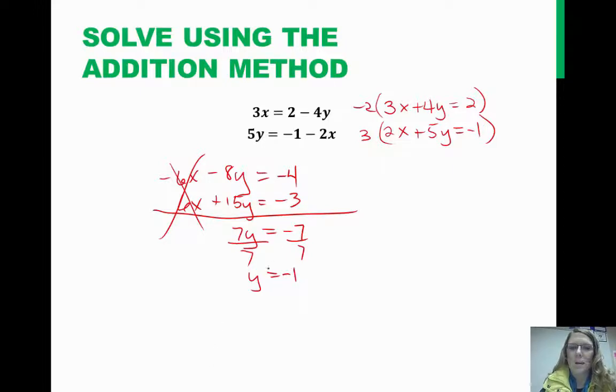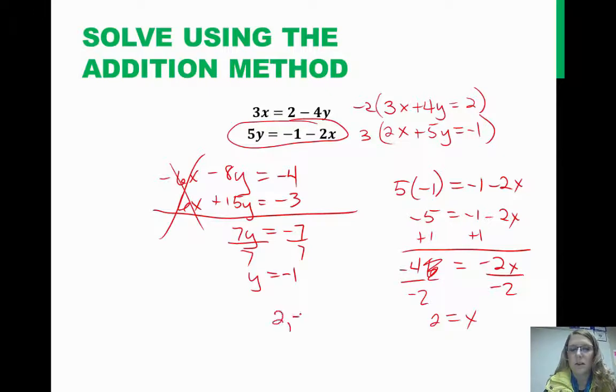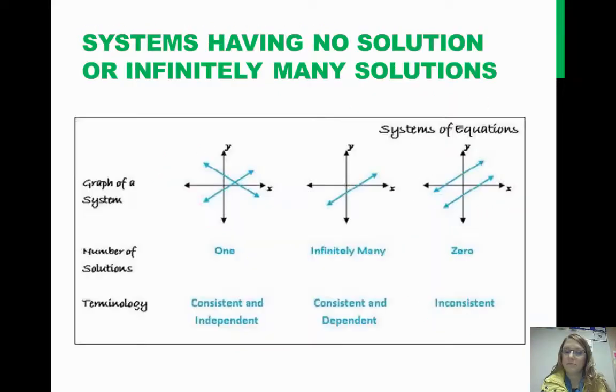Let's back substitute. We can go ahead and put this into one of our original equations. Let's use this one because that one looks like it would be easier to use. We'll do 5 times negative 1 equals negative 1 minus 2x. Negative 5 equals negative 1 minus 2x. Now let's solve for x. That's negative 4 and negative 2x divide by negative 2 for both, and we have 2 equals x. So, our solution here is 2, negative 1. That is where both these lines cross each other.